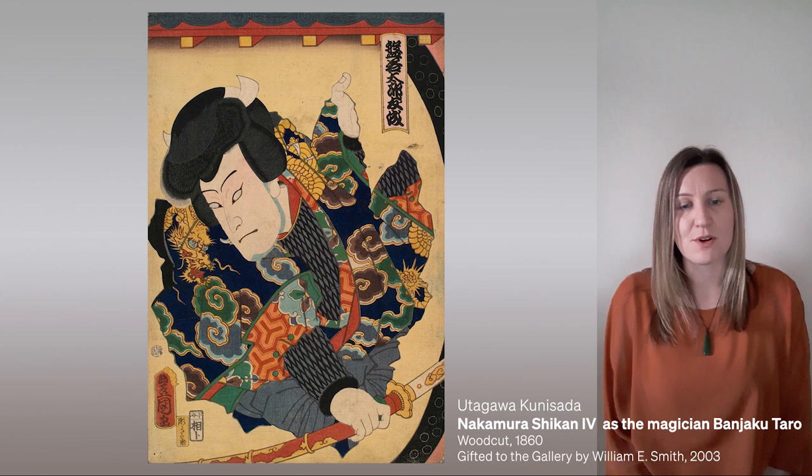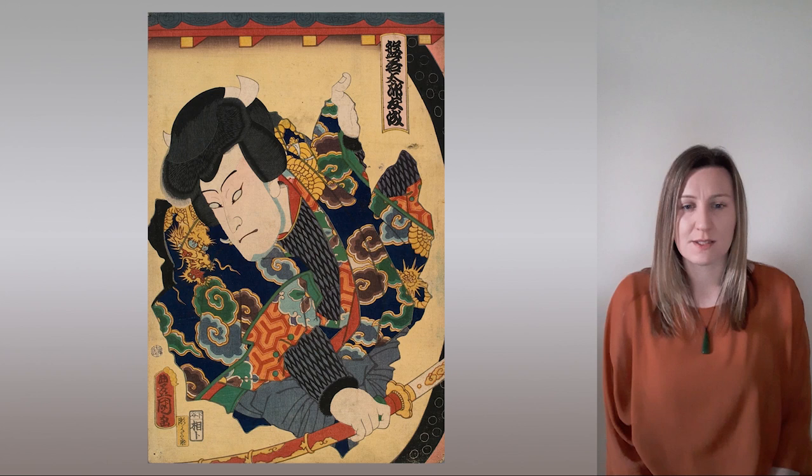Kunisada was the leading print artist of the Edo period and quite possibly the most prolific and successful Japanese print artist of all time. His mass-produced woodblock prints were sold in the city bookstores, and the well-received works were reprinted in multiple editions.